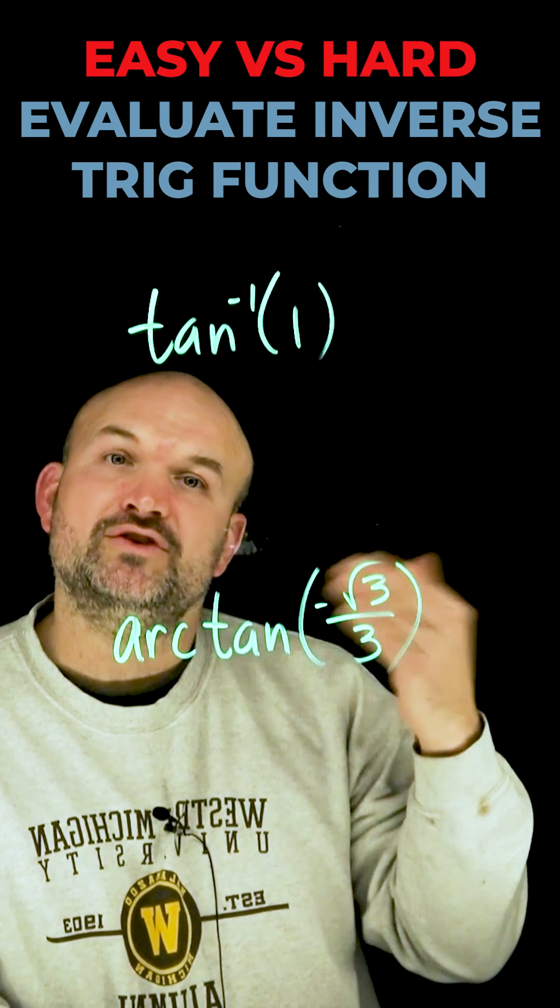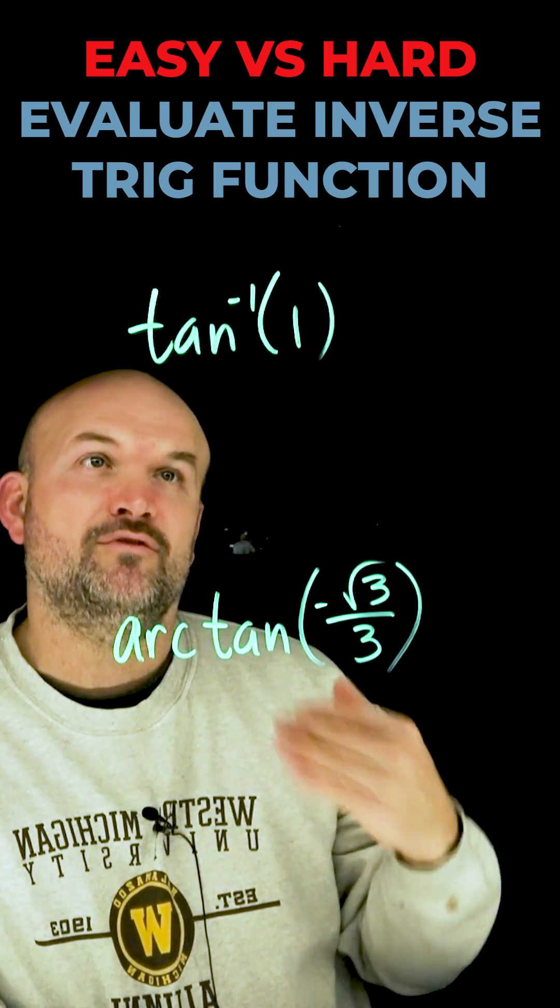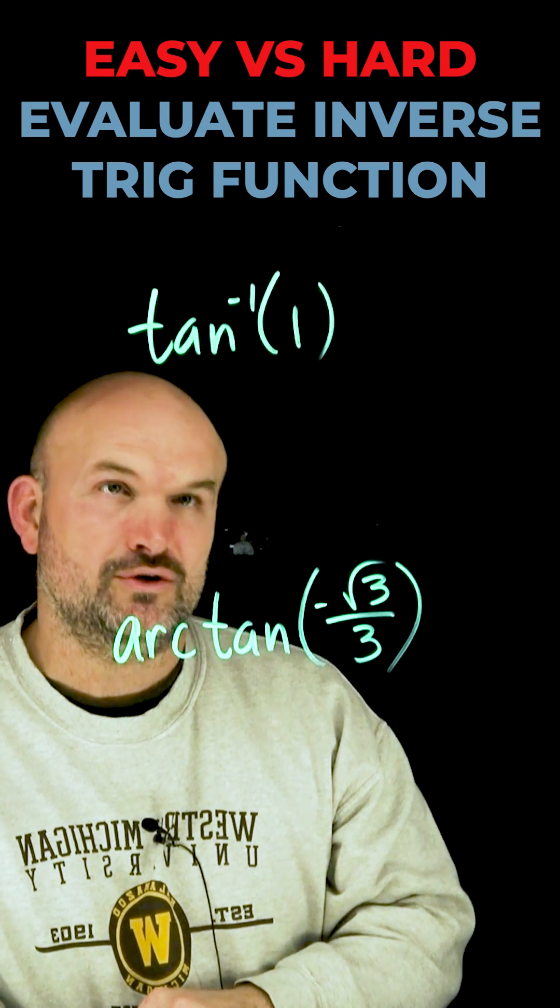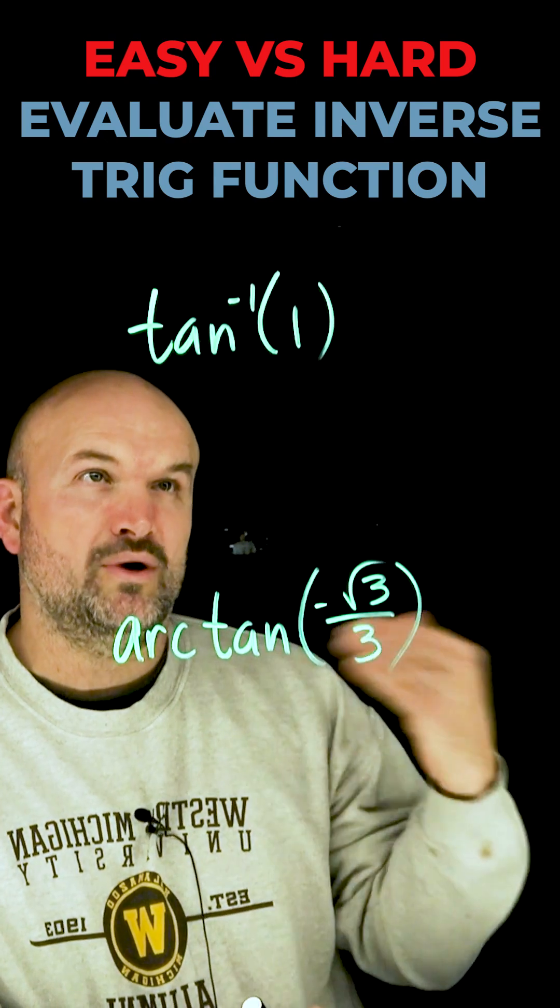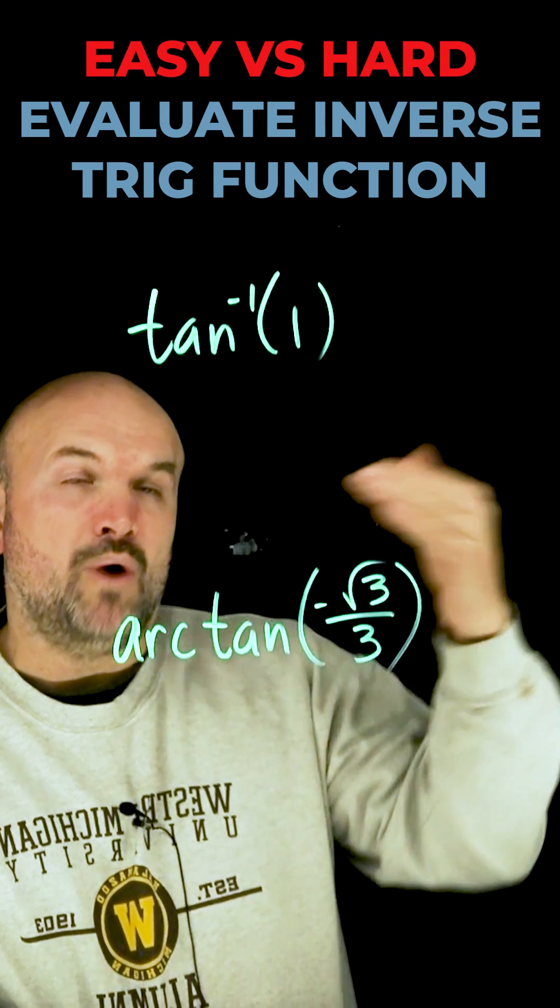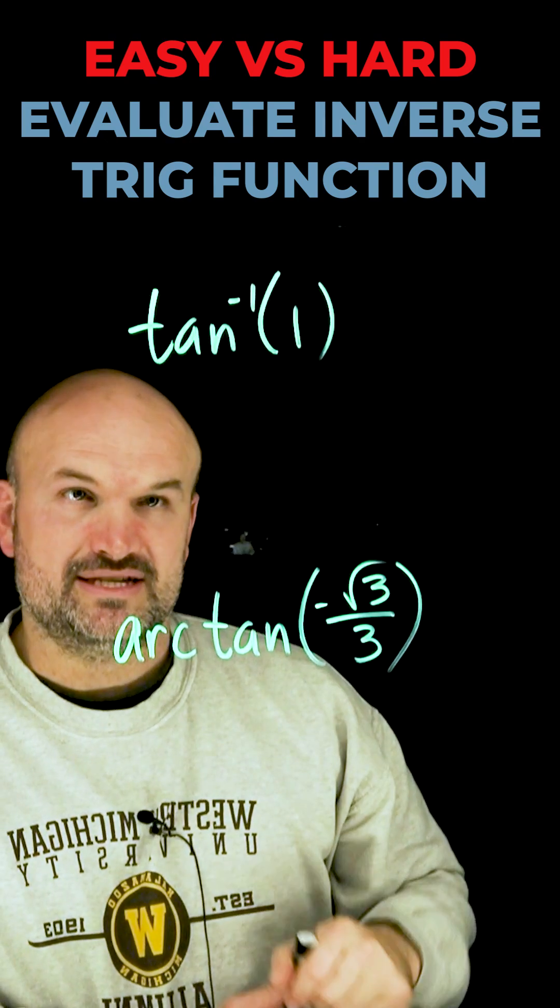1 represents the ratio of your y-coordinate to your x-coordinate for a point given on the unit circle. So what we simply need to do is think about what are the points on the unit circle where their ratio y over x is going to give you a positive 1.